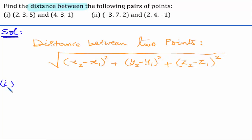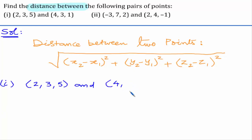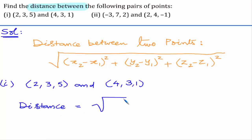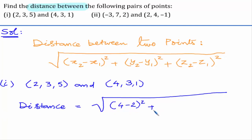Let us consider the first problem. The given points are (2, 3, 5) and (4, 3, 1). Now let us write the distance, which is the square root of (4 minus 2) whole square plus (3 minus 3) whole square plus (1 minus 5) whole square.